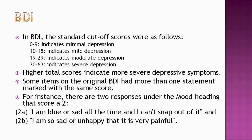Higher total scores indicate more severe depression symptoms. Some items on the original BDI had more than one statement marked with the same score. For instance, there are two responses under the mood heading that score a 2: 2a — I am blue or sad all the time and I can't snap out of it, and 2b — I am so sad or unhappy that it is very painful.